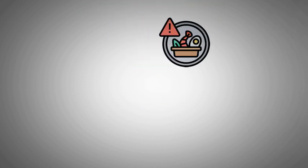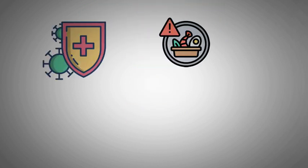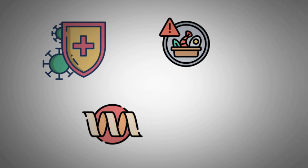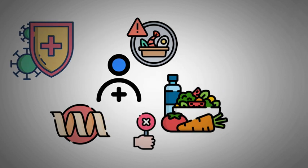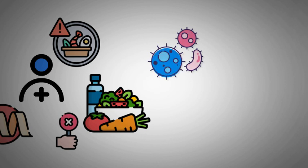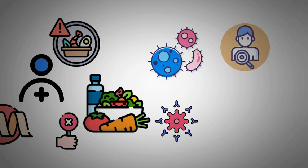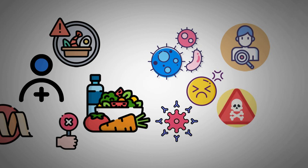A food allergy is an abnormal immune response to specific proteins found in certain foods. When someone with a food allergy consumes or comes into contact with the allergenic food, their immune system mistakenly identifies the proteins as harmful invaders and mounts an immune response. This can lead to symptoms ranging from mild discomfort to severe, life-threatening reactions.